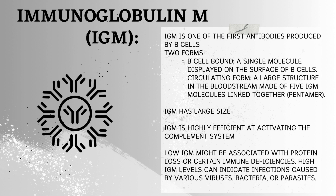Immunoglobulin M (IgM) — the early responder. IgM is one of the first antibodies produced by B cells, making it a key player in the early stages of the immune response. It exists in two forms: a single molecule displayed on the surface of B cells, and a large circulating pentamer — five IgM molecules linked together. Due to its large size, IgM has trouble entering tissues and cannot cross the placenta. IgM is highly efficient at activating the complement system. Low IgM might be associated with protein loss or certain immune deficiencies, while high IgM levels can indicate infections caused by various viruses, bacteria, or parasites.